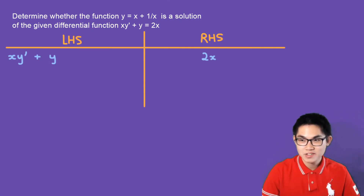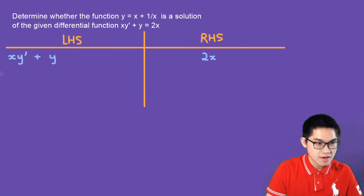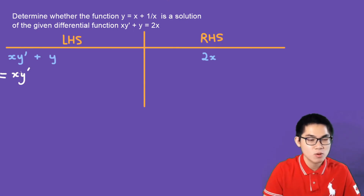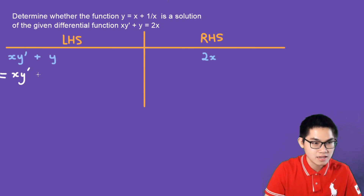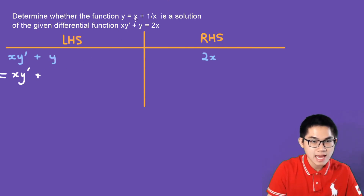So let's go ahead and do that. We have x times y′ — we don't know what y′ is yet, but we'll find it in a second — plus y. And what is y? Y is x + 1/x.